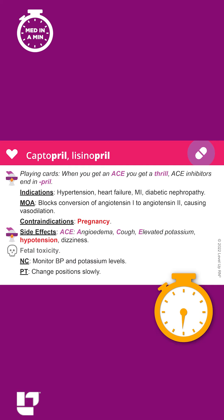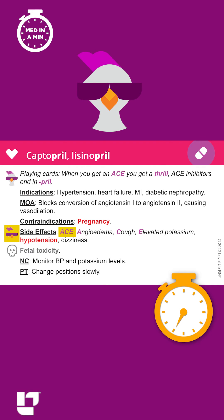You can remember the other key side effects of ACE inhibitors by remembering ACE: A is for angioedema, C is for cough, and E is for elevated potassium.